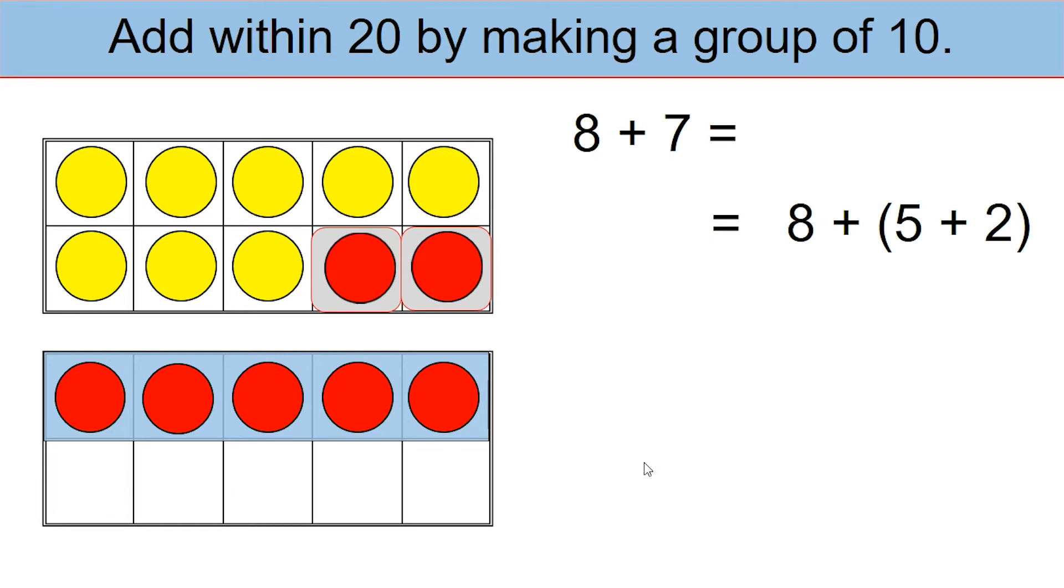We have regrouped the numbers differently. Now you have 8 plus 2 on the first tens frame and 5 more on the second tens frame. The 8 yellow counters and the 2 red counters total up to a 10, and you have the 5 red counters on the second tens frame. Now it's easy to add. 10 plus 5. The answer is 15.